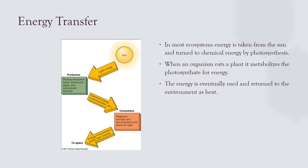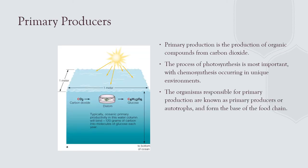Energy moves through the food chain: producers get energy from non-biological sources — chemicals or the sun. Only 10 percent of that energy is passed down to consumers; the rest is lost as heat. Then 10 percent moves from primary to secondary consumer — you lose about 90 percent of energy with each step in a food chain or food web. The ocean's primary productivity is about 120 grams of carbon fixed into glucose per square meter per year.